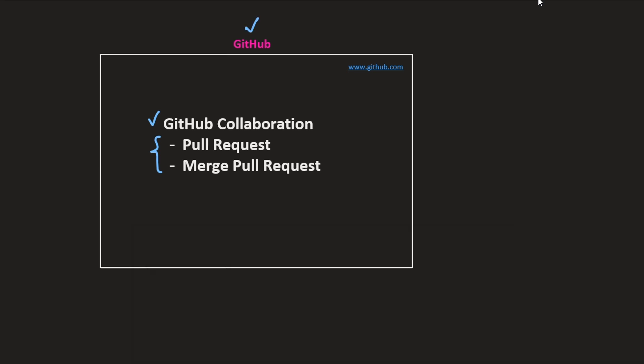GitHub is nothing but a place where you can store your files, similar to Google Drive. The difference is that on GitHub you are supposed to store your code files, and with multiple developers on GitHub you can collaborate with those developers, and those developers can also contribute to your source code.